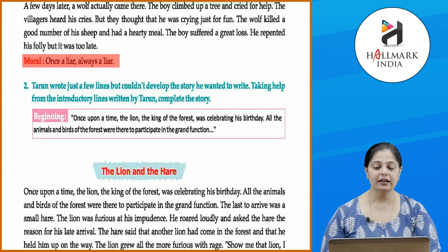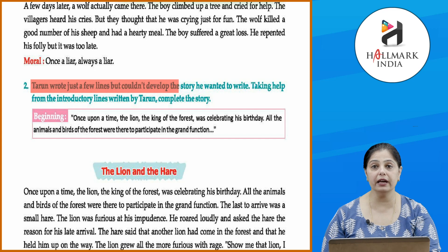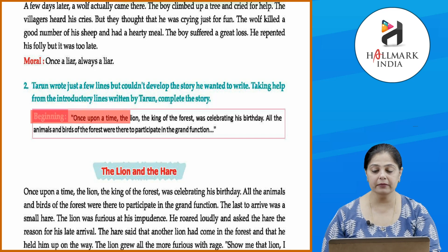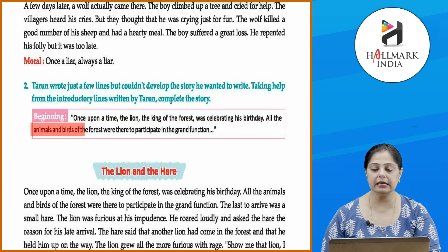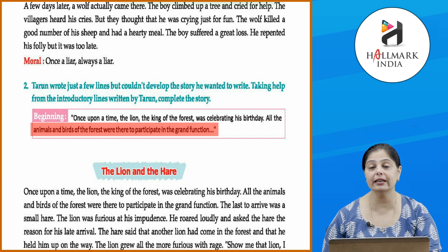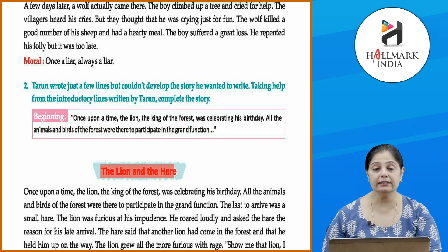Now let's look at the second example. Tarun wrote just a few lines but couldn't develop the story. Taking help from the introductory lines written by Tarun, complete the story. Beginning: 'Once upon a time, the lion, the king of the forest, was celebrating his birthday. All the animals and birds of the forest were there to participate in the grand function.' This is just the beginning — the introductory lines — and now you have to build the story from here.